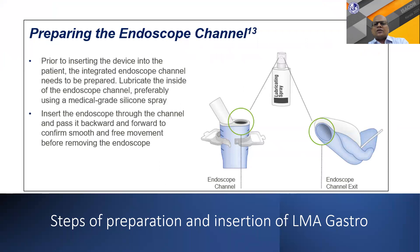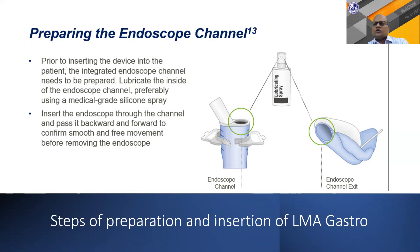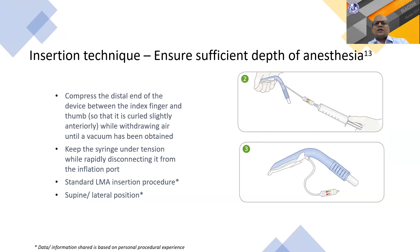The first step in preparation is lubricating the endoscope channel. Medical-grade silicone lubricant is ideal because the device has silicone tubing and the endoscope has a rubberized coating—rubber against rubber creates resistance. Unfortunately, silicone-based lubricant spray is not readily available in India, so we use a water-based lubricant like lignocaine gel, though the manufacturer cautions that this may suppress airway reflexes and carry an aspiration risk.